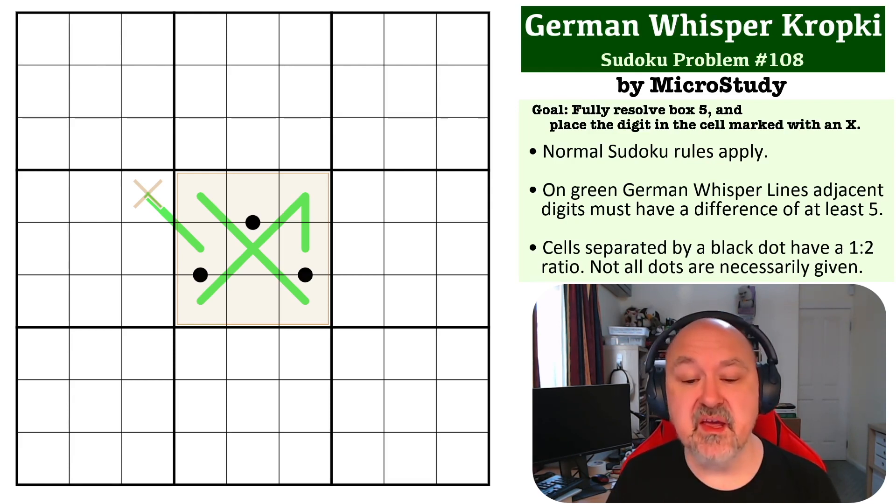Okay, so the important thing to remember with this one when you start, there's a couple of important tricks, but the way I started this one was to think about two important things. The first one is on German Whisper lines, you can never place a 5 because if you place a 5 on a German Whisper line, there's nothing you can put next to it because if you go down from a 5, 5 lower than 5 is 0 or lower, not a valid Sudoku digit, 5 higher than 5 is 10 or higher, not valid Sudoku digits. So you can never place 5 on a German Whisper line.